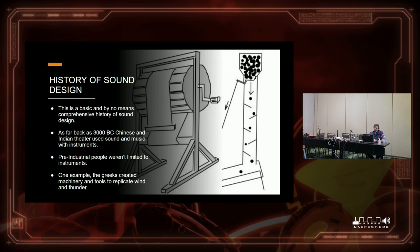People have been using sound design in theater and religious rituals for thousands of years. As far back as 3000 BC, Chinese and Indian theaters were using instruments to create sound design and music. Pre-industrial people weren't limited to just instruments — you can see on the slides these two machine-like devices used to create thunder and wind. The one on the right is basically a big tube with animal hides, and they'd drop brass balls down it to create thunder. It shows how creative people can get. I'm not saying you need to build that for your D&D game — that would be a little insane.